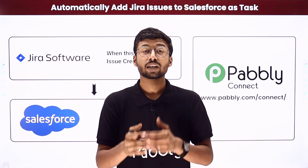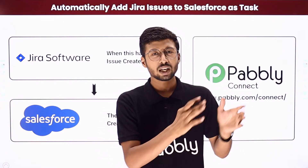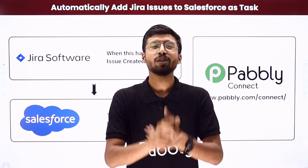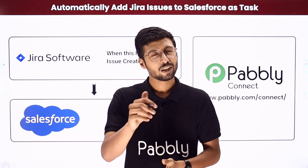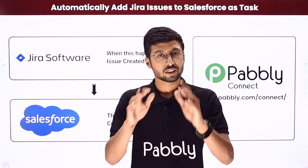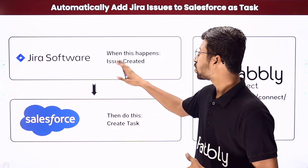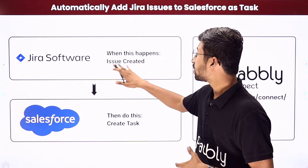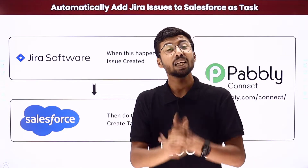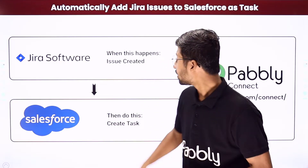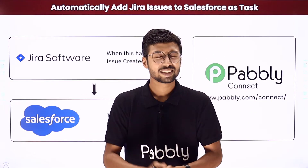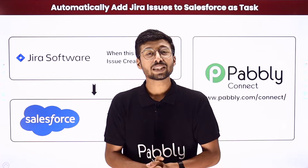The manual process of getting the details of every issue from Jira and creating tasks in Salesforce can be very repetitive and time consuming. So in this video I came up with an awesome automation by which whenever a new issue will be reported in Jira software, automatically a new task will be created in Salesforce as well with the very same details. Interesting, right?